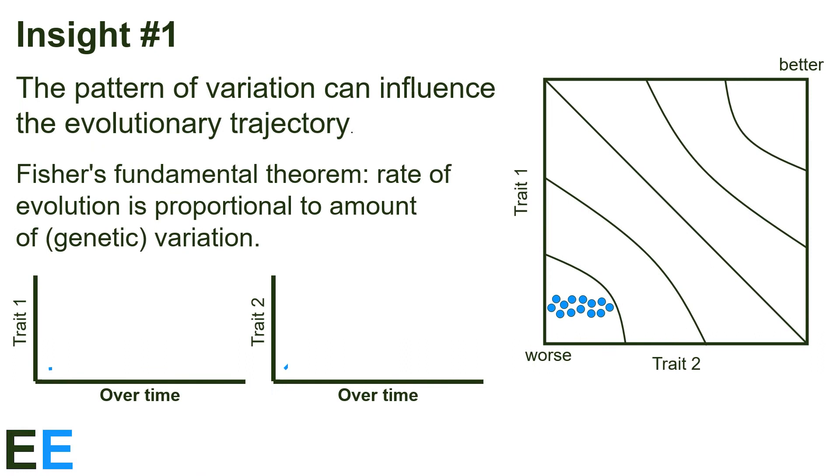On the other hand, if the initial pattern of variation looks like this, then Fisher's fundamental theorem tells us that the population will initially respond in the horizontal direction more than the vertical because that direction exhibits more variation. After the population has increased trait two for a while, then the variation will be reduced, and now selection will be as effective at changing trait one.